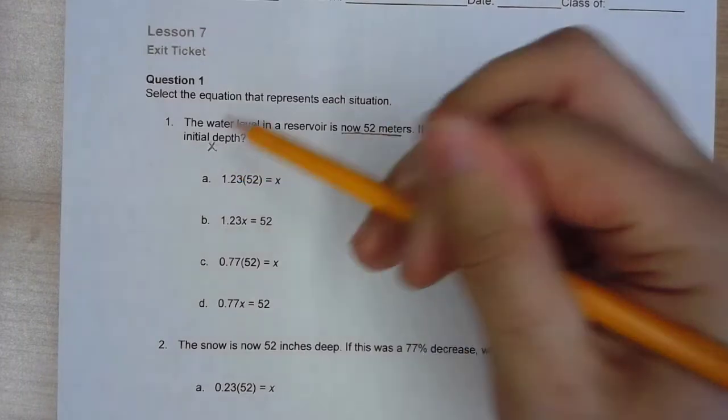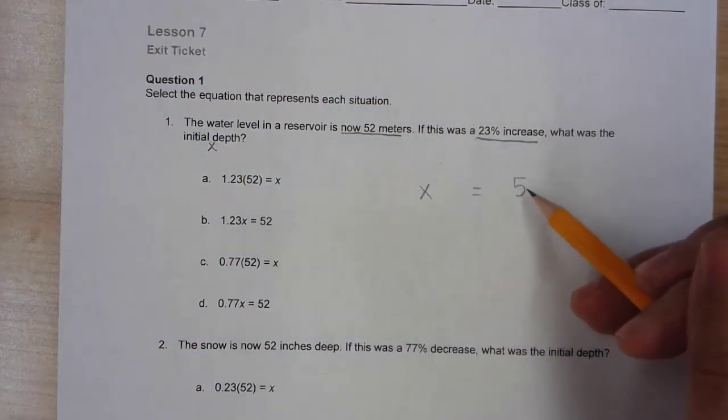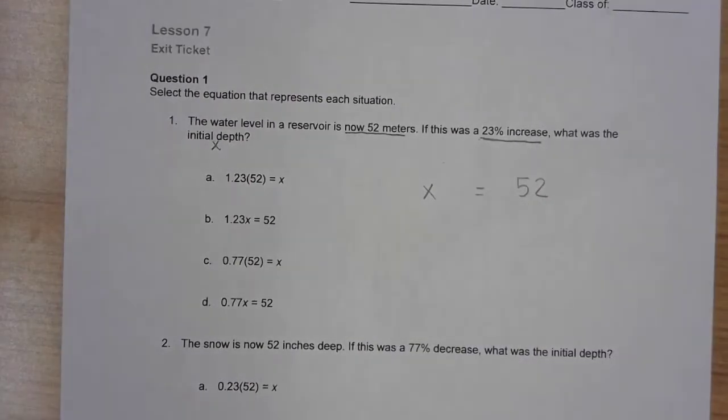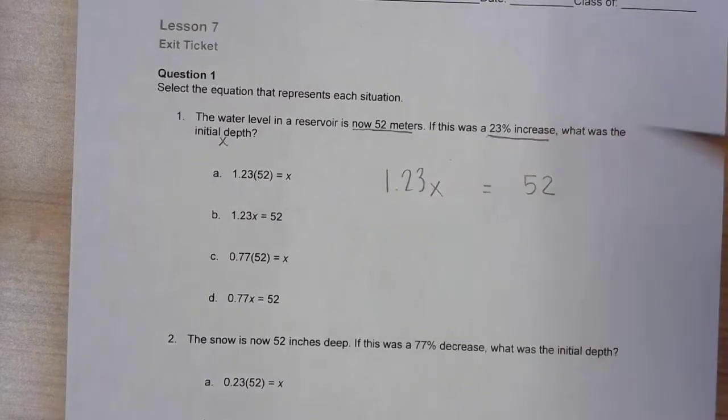We don't know what the depth is, which is why it's asking us. We're gonna label that as X. How do we get from X to what it is now of 52 meters? Well it tells us there's a 23% increase, so if I'm increasing something by 23%, I'm left with 123%.